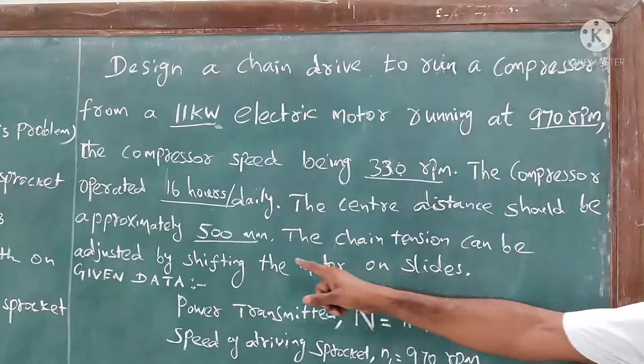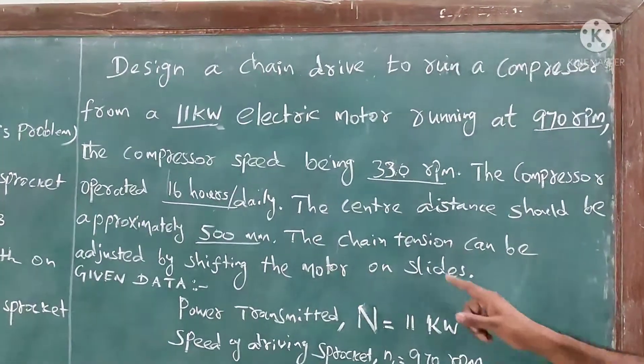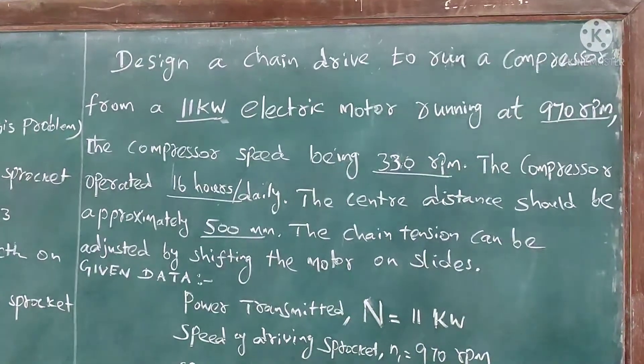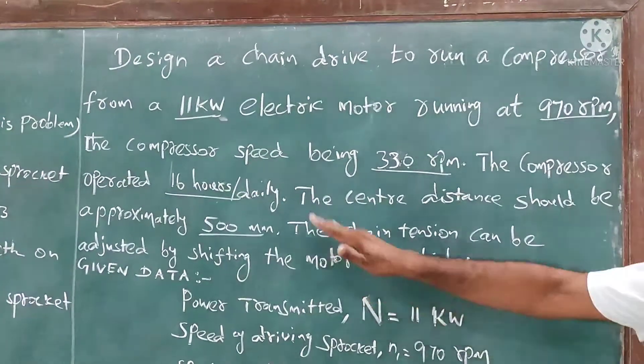The center distance should be approximately 500 millimeter. The chain tension can be adjusted by shifting the motor on slides. This is the problem.